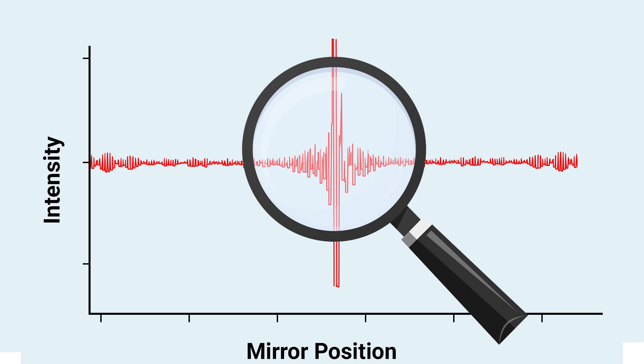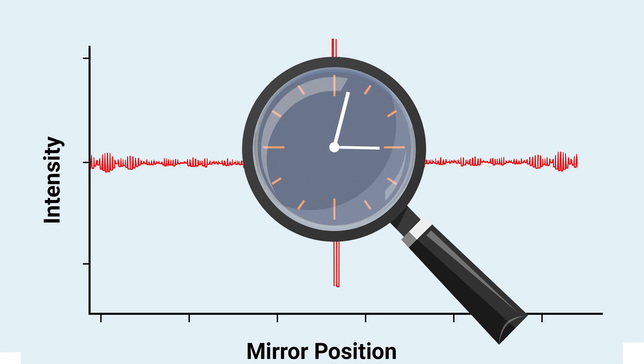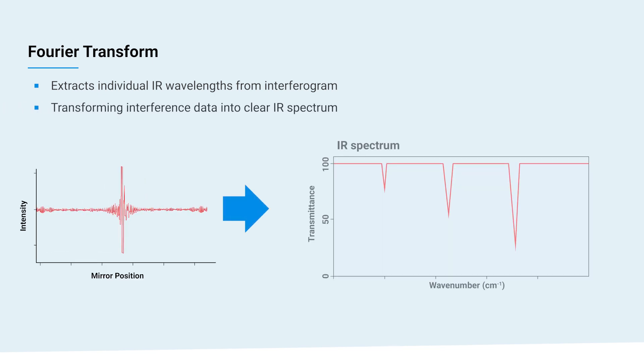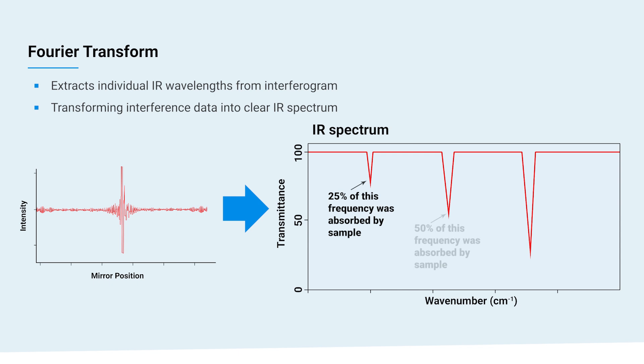However, looking for changes in an interferogram would be quite tedious. This is where Fourier transform comes into play. This mathematical function extracts the individual IR wavelengths from the interferogram, transforming the complex interference data into a clear IR spectrum.